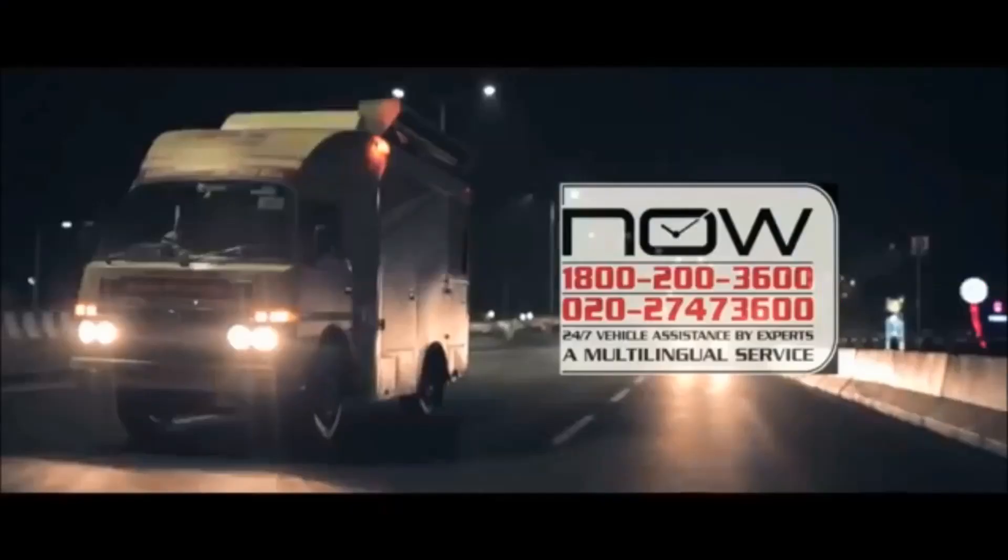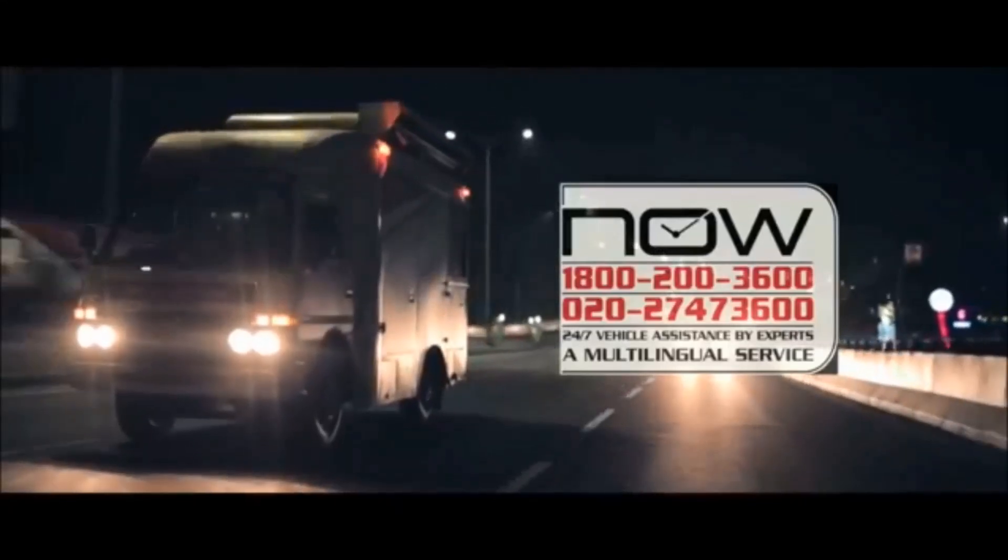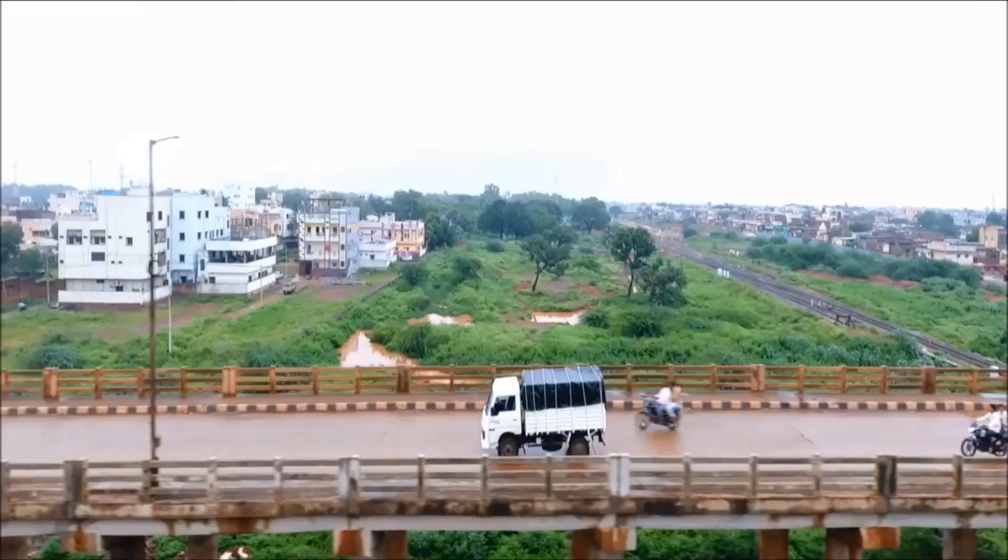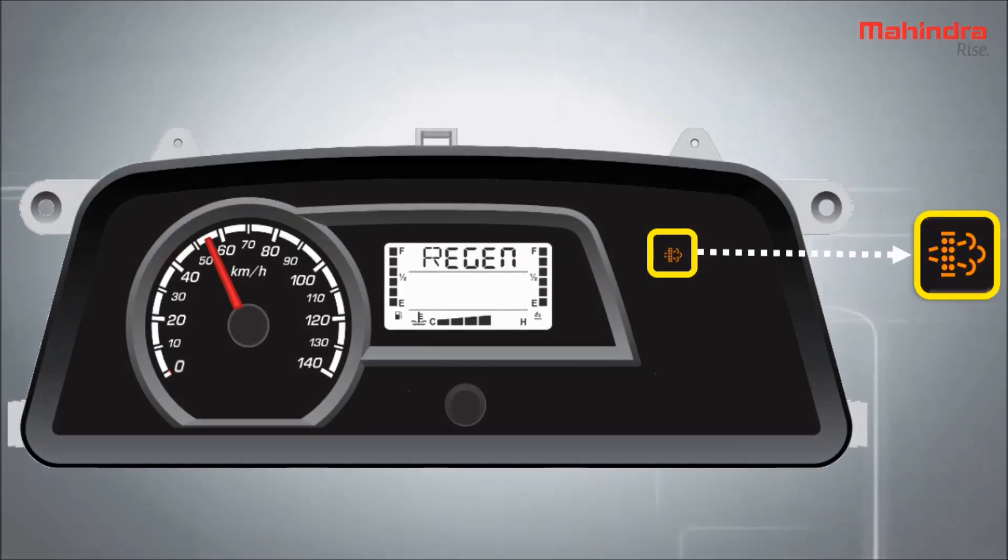For more information and help, it is necessary to contact Mahindra Now call center. For undisturbed running of the vehicle, it is important to run the vehicle at the speed of 50 km per hour and more, or complete the parked regeneration process as soon as the amber indication of DPF regeneration is shown on the instrument cluster.